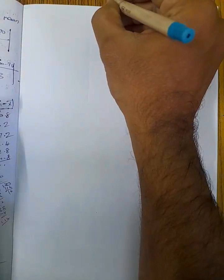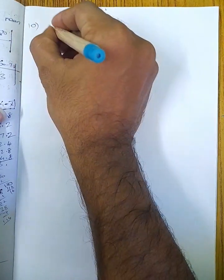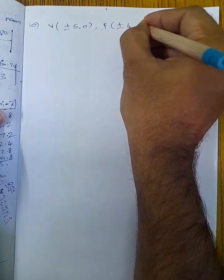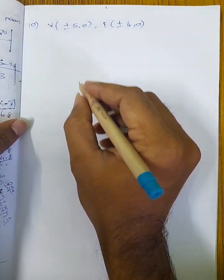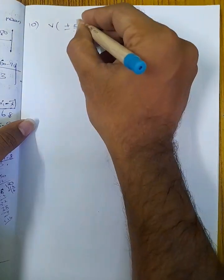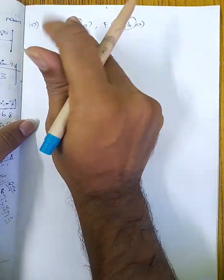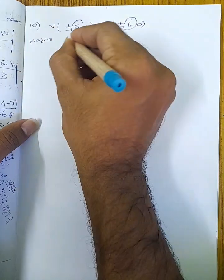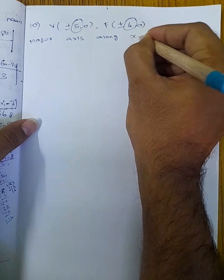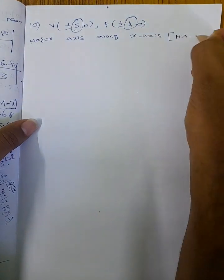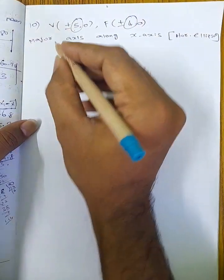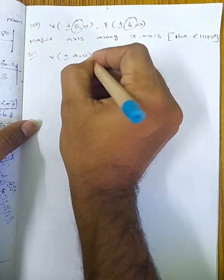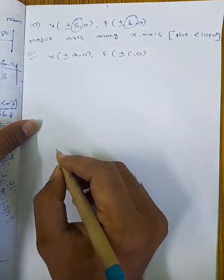In the 10th question, first we have vertices plus or minus 5, 0. Next, foci plus or minus 4, 0. So now we have an x-axis. Vertices are on the x-axis, foci are on the x-axis. So now we have a horizontal ellipse. The standard form has vertices at plus or minus a, 0 and foci at plus or minus c, 0.